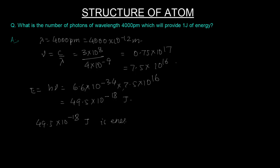By unitary method, one joule of energy is contained in 1 divided by 49.5×10^-18 photons. That becomes 2.02×10^16 photons. So many photons will give you one joule of energy.